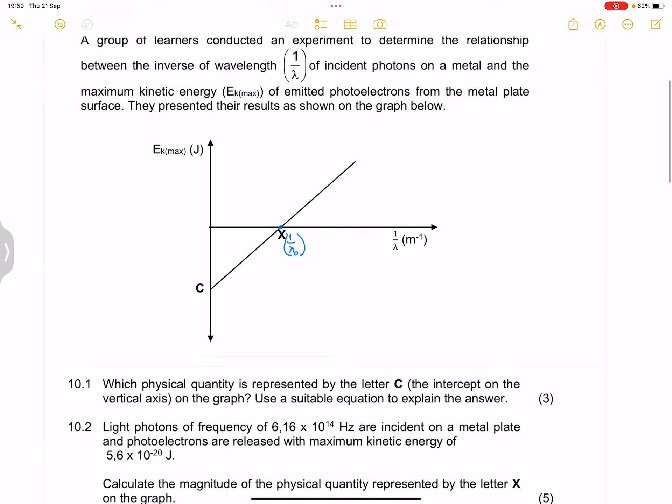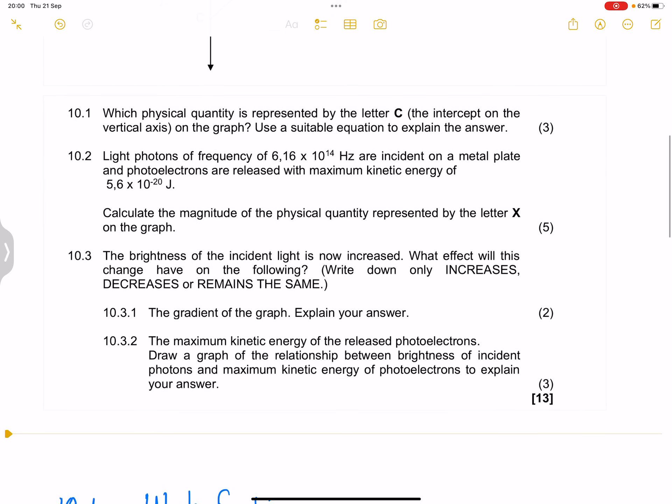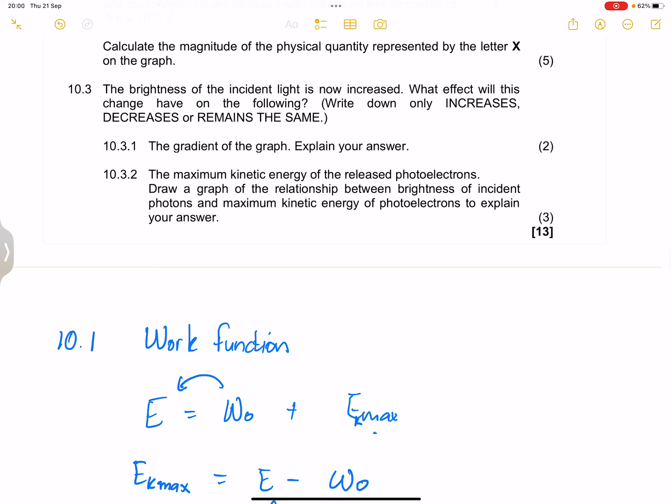In this case, it means that we are going to emit more electrons per second. So in this case, it means that the current increases because the number of electrons that are emitted per second will increase. However, the kinetic energy of the electrons remains the same. So they say to us what will happen to the gradient of the graph? Now, remember, I showed you that the gradient of the graph in this case shows you the product of Planck's constant as well as the speed of light. That will never change. Because remember, this is a constant as well as the speed of light is a constant as well. So the gradient would remain the same. And of course, you can explain that in 10.3.1. It would remain the same because both Planck's constant and the speed of light remain the same, they do not change.